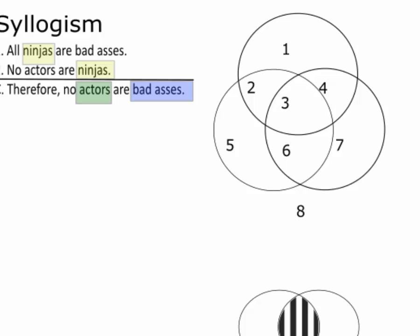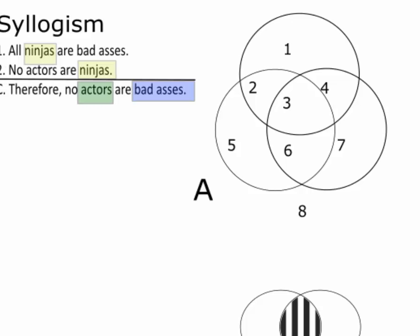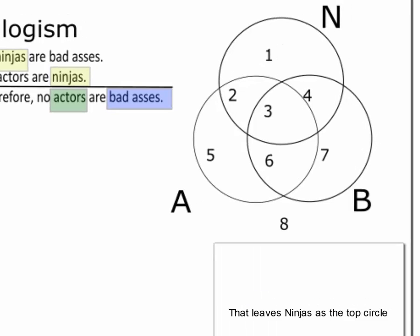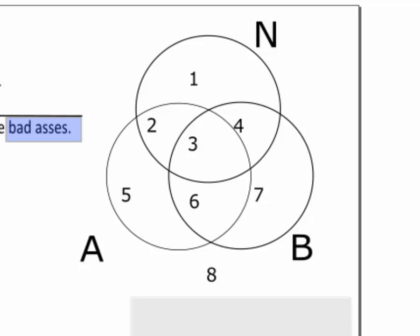We need to label the circles. It will help simplify things if we all label things in a systematic way. Make the left circle represent the minor term, in this case, actors. And make the right circle the major term, in this case, badasses. Now, take a minute to examine the diagram and think about what each region represents.